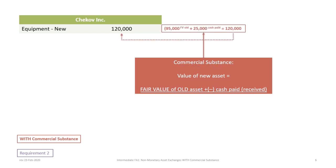In our situation, the fair value of the old asset Chekhov is giving up is $95,000, and Chekhov is paying Sulu an additional $25,000, making the value of the new asset $120,000. To verify we are not recording too high a value, we compare the fair value of assets given up ($120,000) to the fair value of the new asset ($130,000). Since $120,000 is less than $130,000, recording at $120,000 is acceptable.